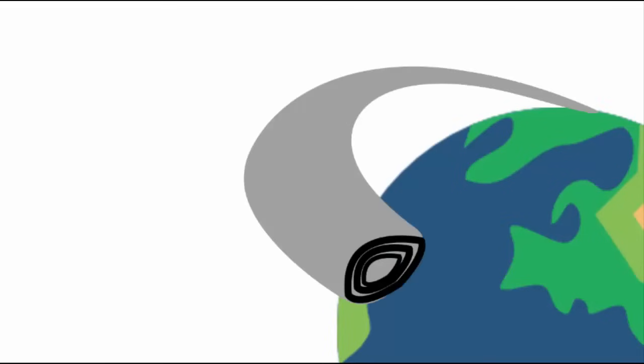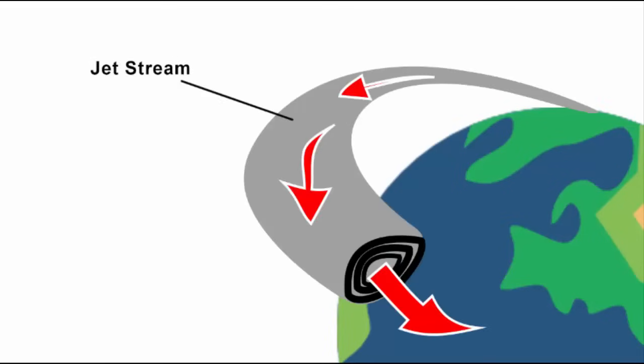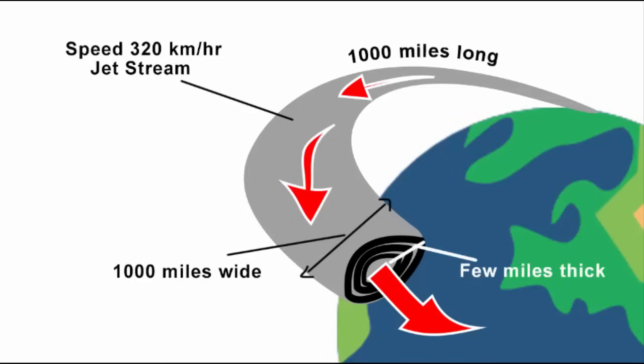Now jet streams can flow up to 320 kilometers per hour and they are thousands of miles long, thousands of miles wide and a few miles thick.